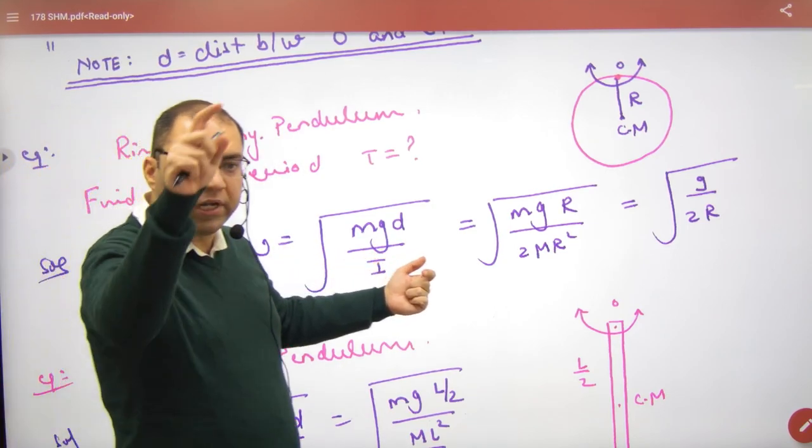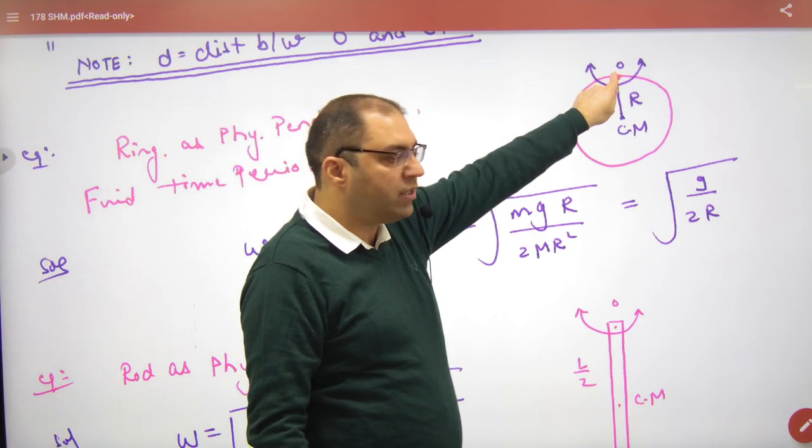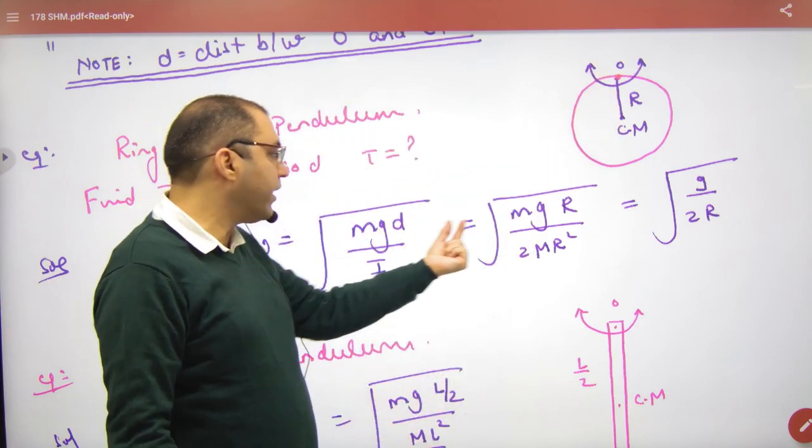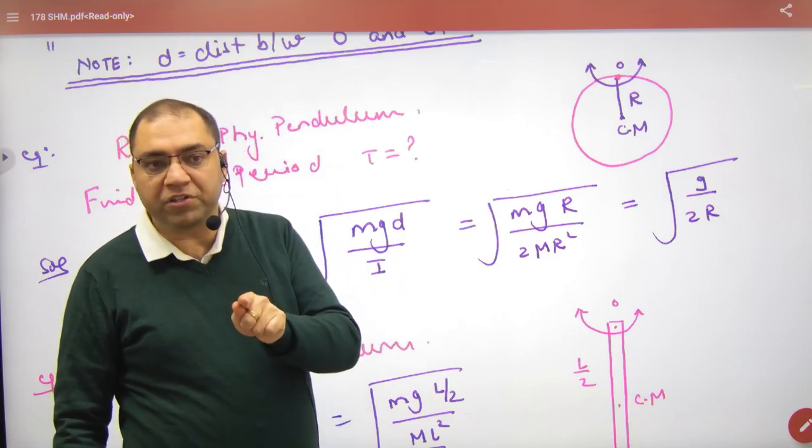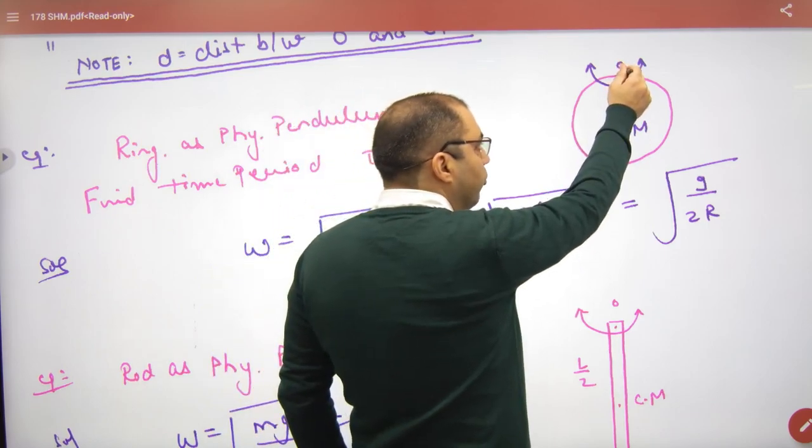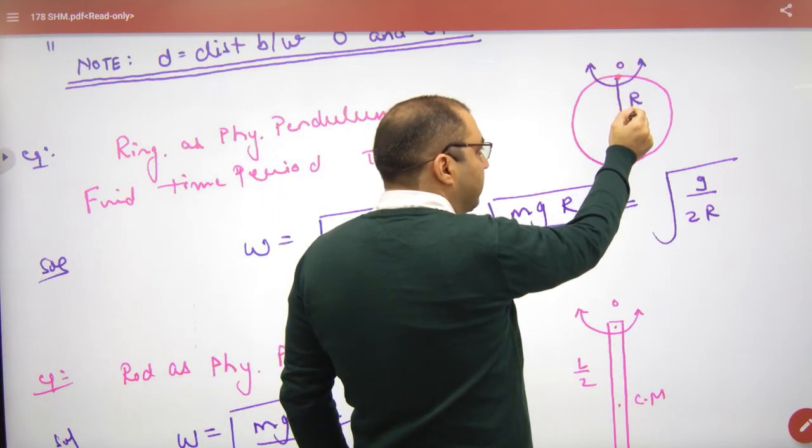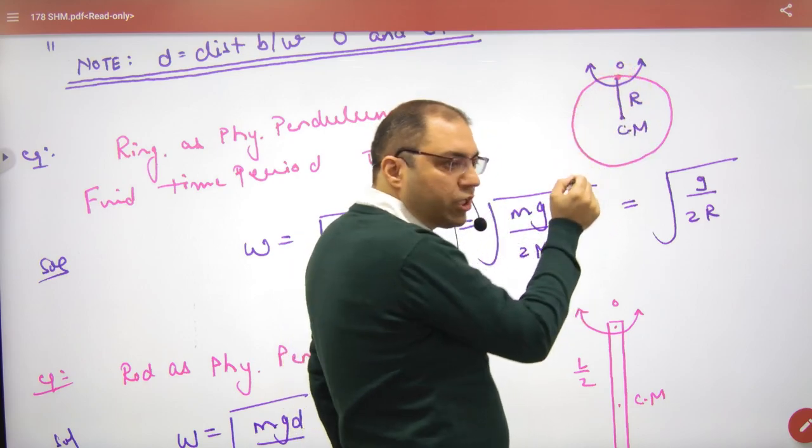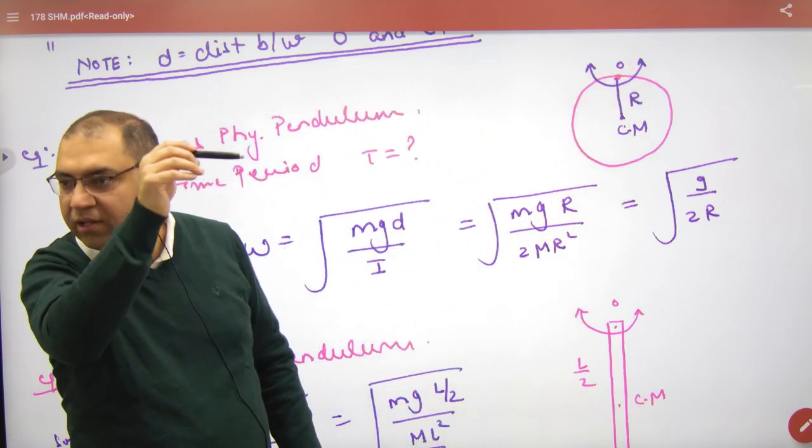Now when you are tied in the ring, what is the distance of the axis and the center of mass? R. So what will we put on d? R. I, moment of inertia. What will happen in the ring? What will happen in the axis? What is the formula I? MR square. So what will happen in the parallel axis? MR square plus MR square.